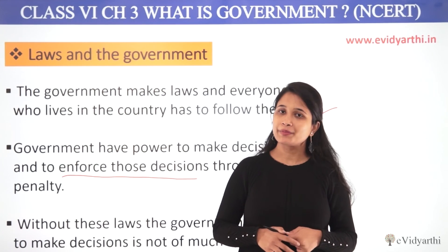So this is your law and the government. We understood the relationship between government and law, and what we learned: the level of government, in which we covered three levels — central government, state government, and the last one was local government. This is all for this video. I will see you in the next video. Till then, stay safe and keep learning with us. Bye bye.